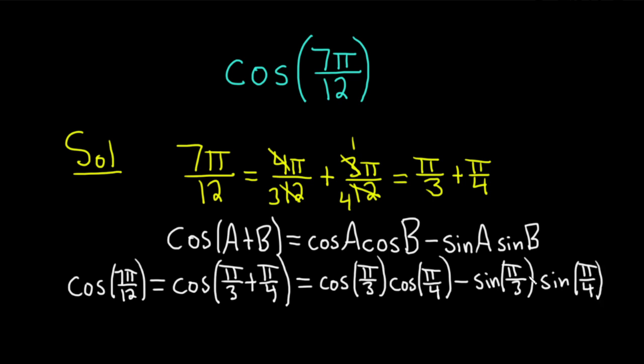And these are all angles that we know from memory. This is equal to, cosine of π over 3 is 1 half. Times cosine of π over 4 is the square root of 2 over 2.